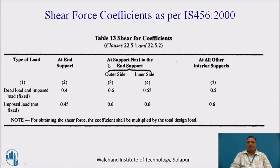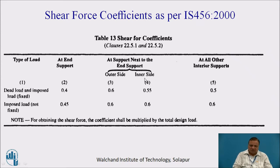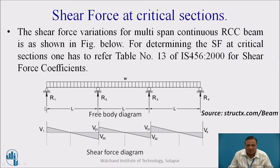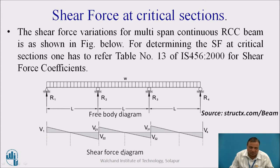Next, there is a column for the support next to the end support, with values given for both outer side and inner side. As shown on the figure, V1 and V4 are end supports, and the supports next to them — from both sides — are the supports next to the end support. Here you will find the outer side and the inner side, and for both the values are different.